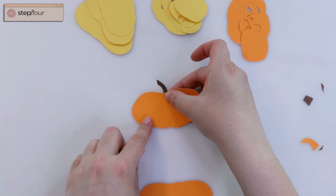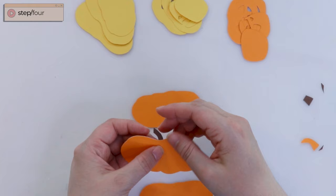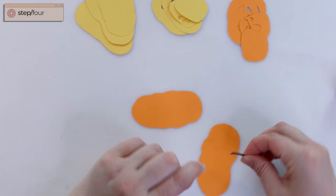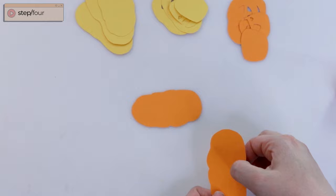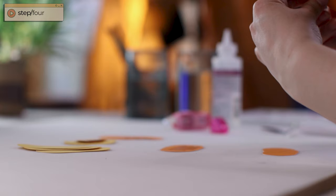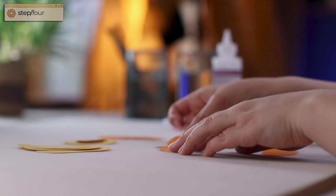Then with some tacky glue, attach your brown stem to the back center of your second largest shape. Then with your tombow tape runner, sandwich the stem between those two shapes, and this will make the stem appear to be growing through the center of our pumpkin.